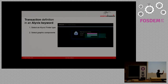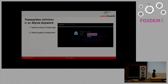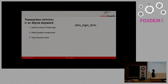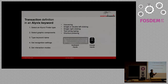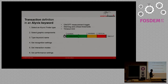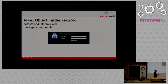Practically speaking, it's really easy to define a transaction through Alivix. It's a matter of selecting a finder type, pointing, clicking, and dragging your main selection and sub-components, typing the name of the keyword, setting up your recognition settings, and then setting up interaction modes to click on graphical elements, push text strings, and set performance thresholds.